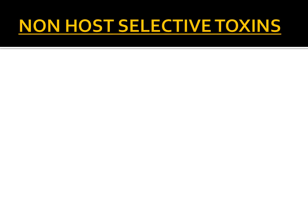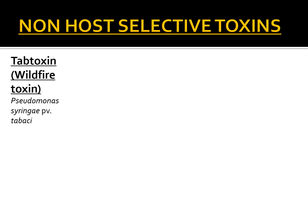Coming to the non-host selective toxins or NSTs, the first one is tabtoxin, also called wildfire toxin. Tabtoxin is produced by Pseudomonas syringae pathovar tabaci, a bacterium that causes wildfire disease of tobacco. Please remember it is a non-host selective toxin, so it is not essential for the disease to develop but it can increase the extent of the damage. This toxin was first isolated in this pathovar but is now understood to be produced by other pathovars as well.